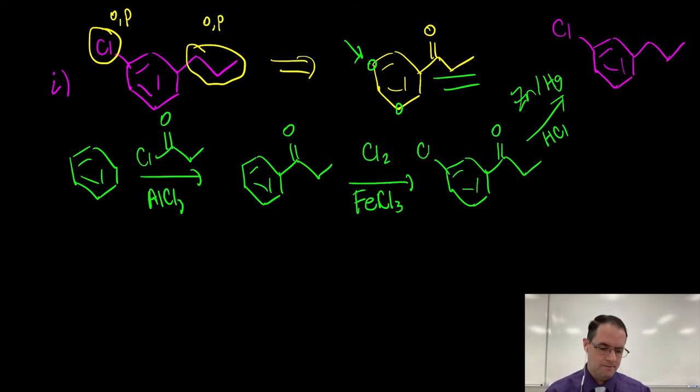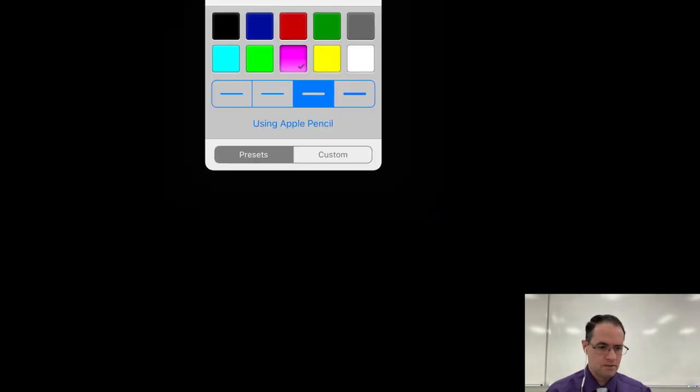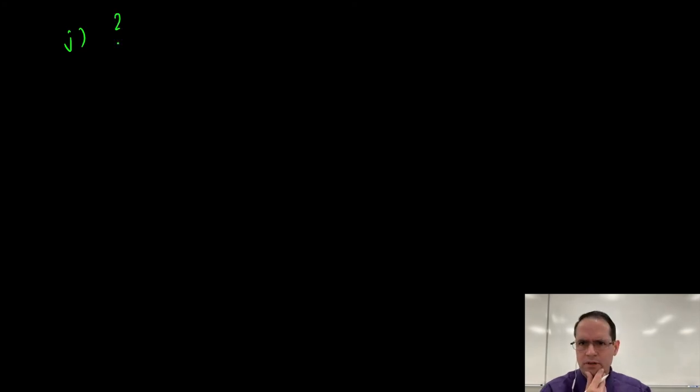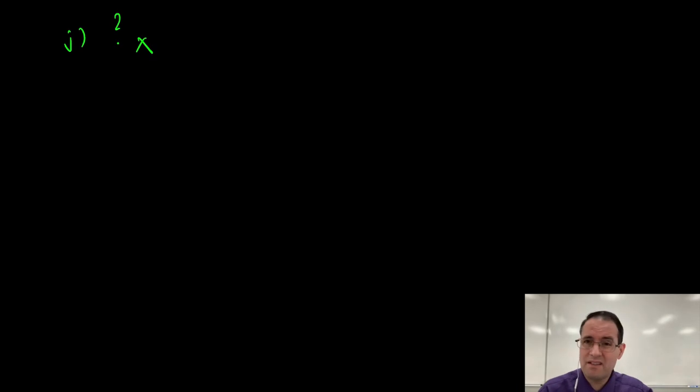Molecule J — I believe this one requires blocking groups. I can't figure this one out, so I suspect it uses sulfuric acid and blocking strategies. Don't worry too much about that.